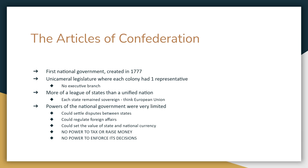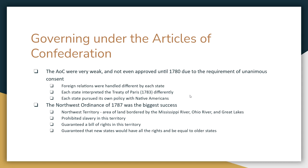The powers actually given to the national government were limited. The national government could settle disputes between states, regulate foreign affairs, and set the value of coins. It could not raise money or raise taxes at all. And if that's not bad enough, there was absolutely no power to enforce decisions upon the states. The Articles of Confederation were purposely weak. Even though they were written in 1777, they didn't even go into effect until 1780, because Maryland refused to sign on due to disagreement over how Western lands were distributed.